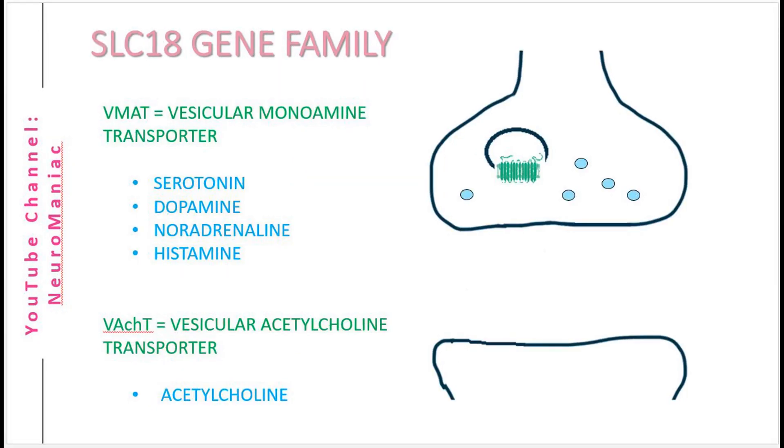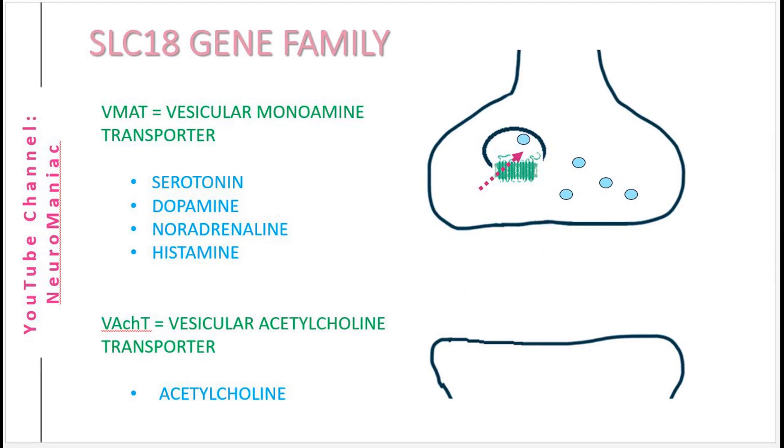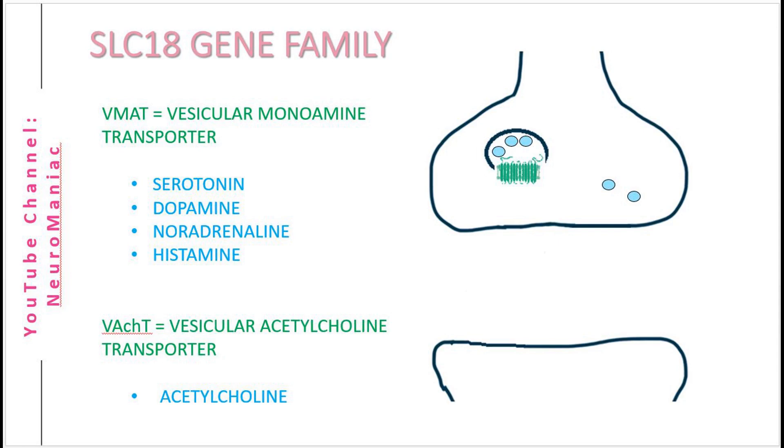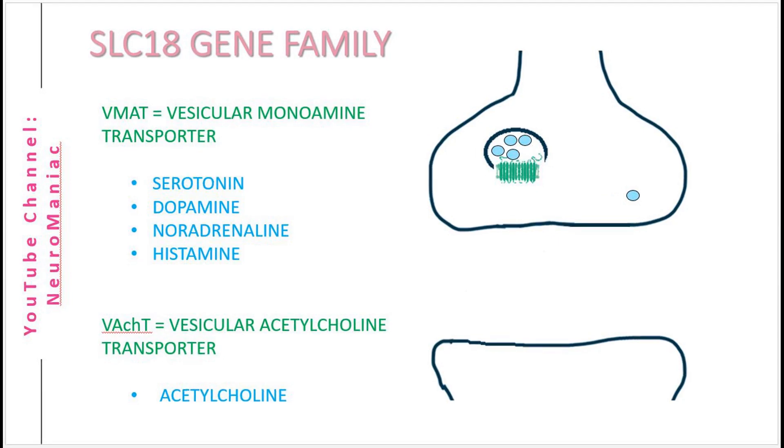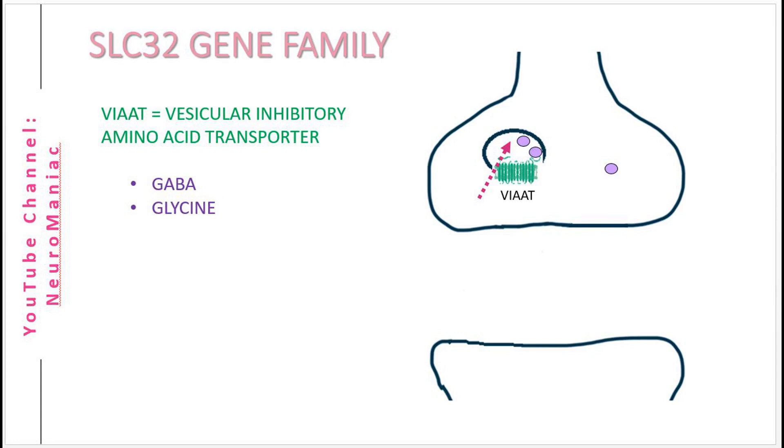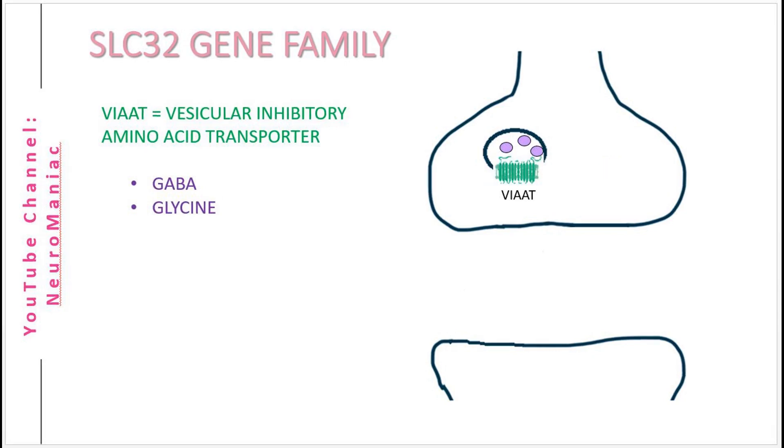SLC18 gene family contains transporters that enable vesicular storage of serotonin, noradrenaline, dopamine, histamine and acetylcholine. On the other hand, vesicular inhibitory amino acid transporters, known as VIAAT, enable the vesicular storage of GABA and glycine, as part of the SLC32 gene family.